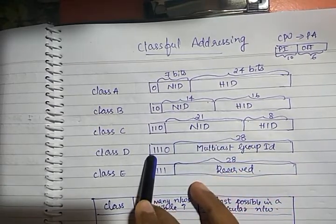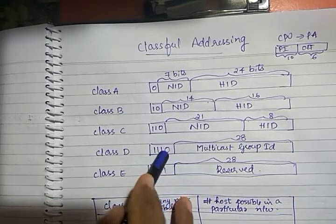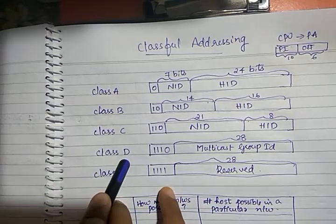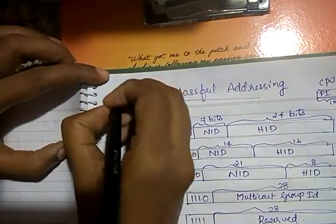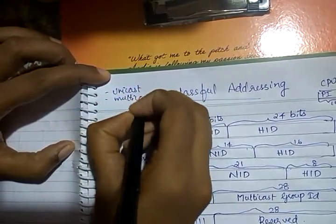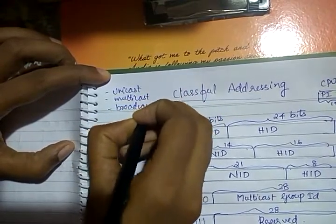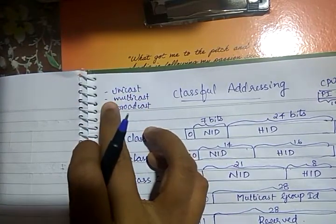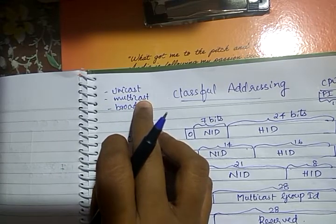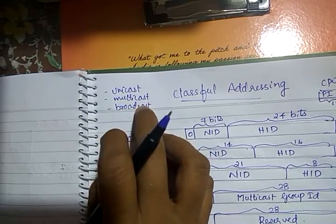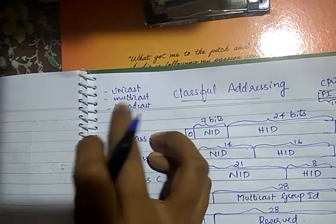For Class D, the most significant 4 bits are for identification, giving 28 remaining bits. Class D is not divided into Network ID and Host ID because it is used for a special purpose called multicasting, not unicasting. We have three types of addressing: unicast — sending from one machine to another (one-to-one); multicast — sending from one machine to many (one-to-many); and broadcast — sending within a network to everyone. Multicast is a subset of the broadcast area.